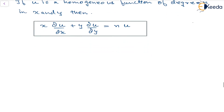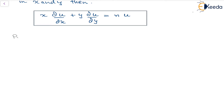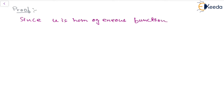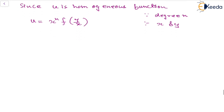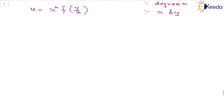Now we'll see the proof. Since u is a homogeneous function, we can write u as x to the power of n times f(y/x), since the degree given is n and the variables are x and y. Now let's find the partial derivatives of u with respect to x and y.